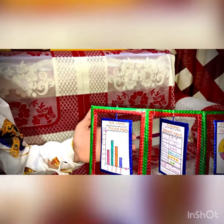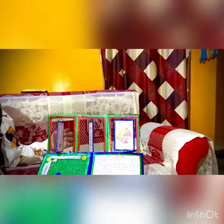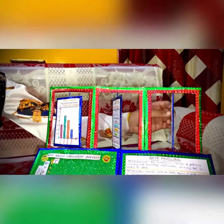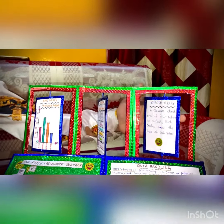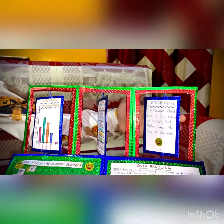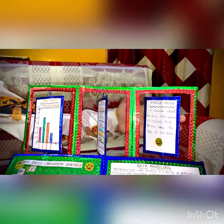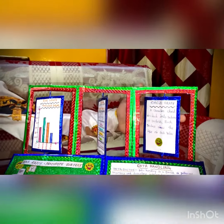Pictograph uses pictures or symbols to show the value of data. Bar graph is a graph drawn by using rectangular bars to show how large each value is. Circle graph is a circular chart divided into sections and sectors.